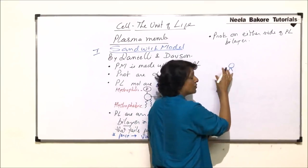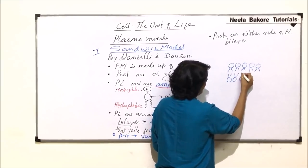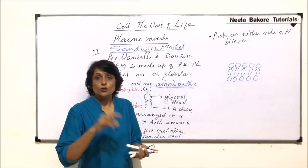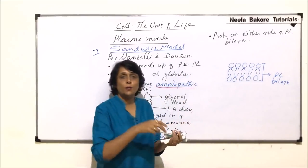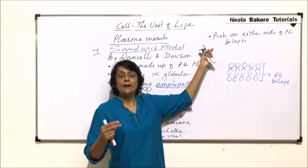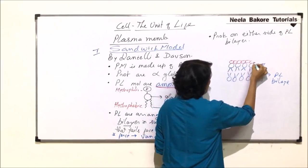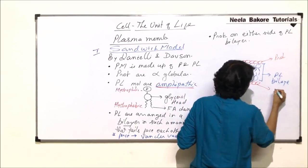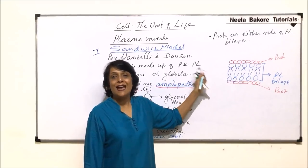We draw the phospholipid molecules — just the head and the tail — and as stated by Danielli and Davson, the tails are facing each other in the two layers. This gives us the phospholipid bilayer. Between the two layers there is a weak Van der Waals force holding them together. The proteins are present on either side of the bilayer as globular proteins, so we draw them as spherical shapes on both sides of the plasma membrane.